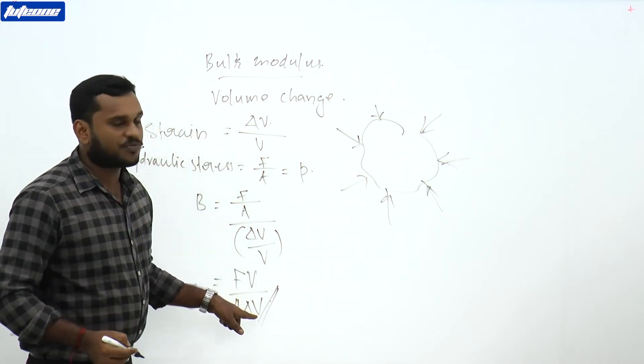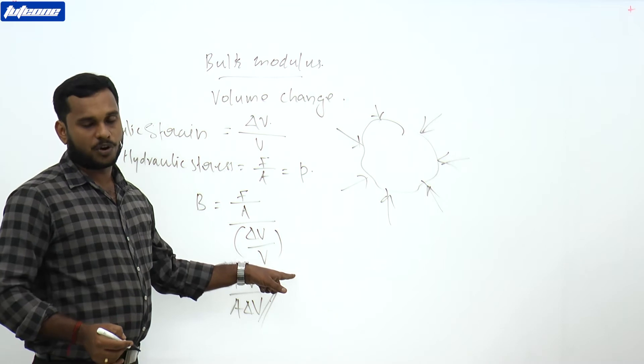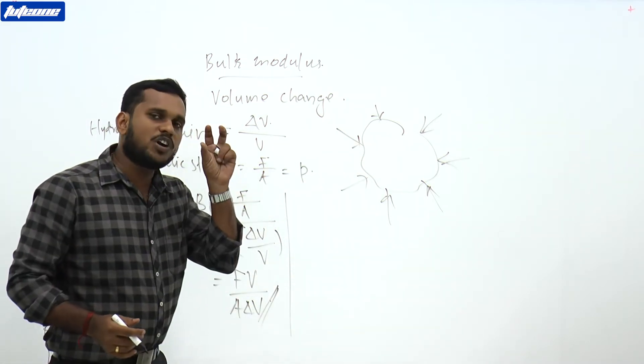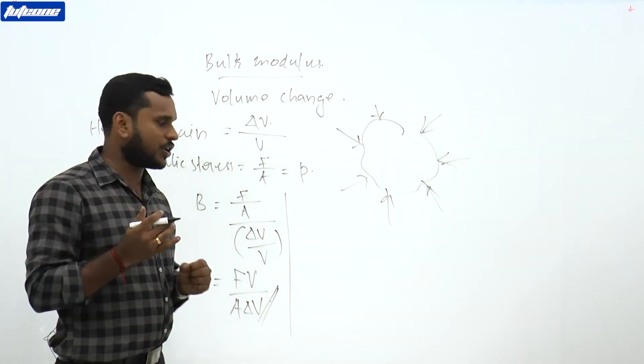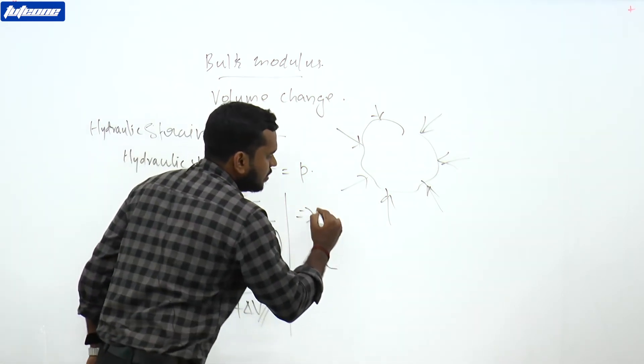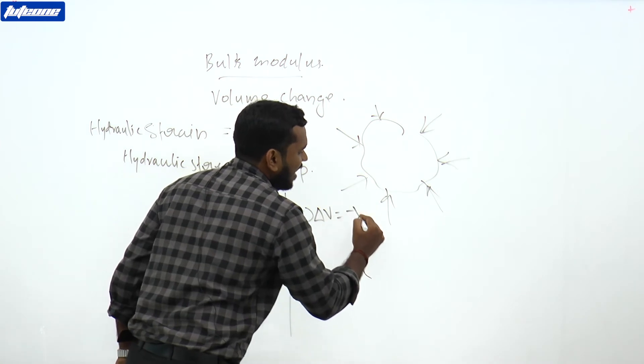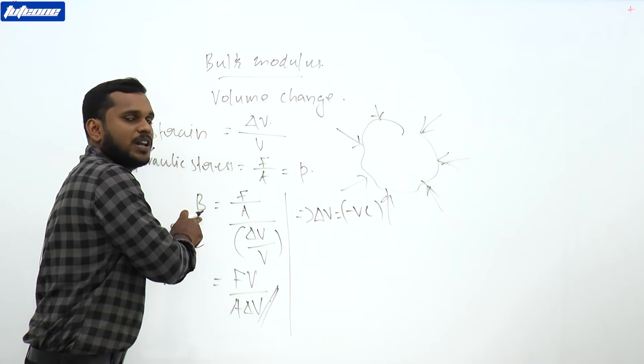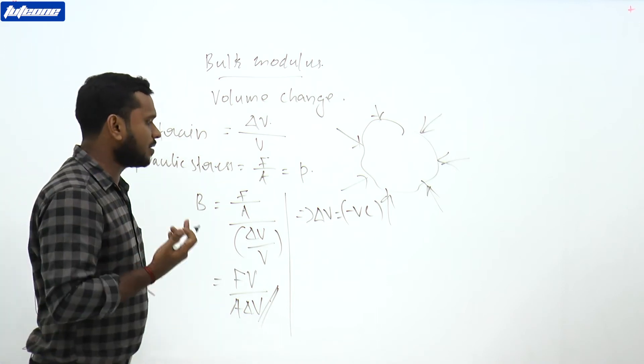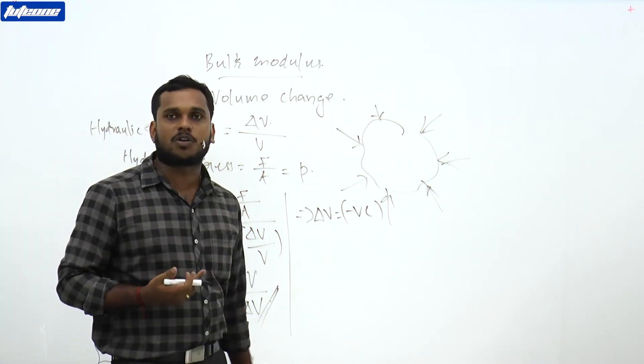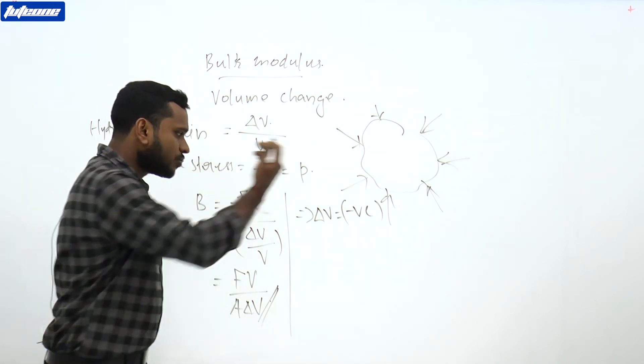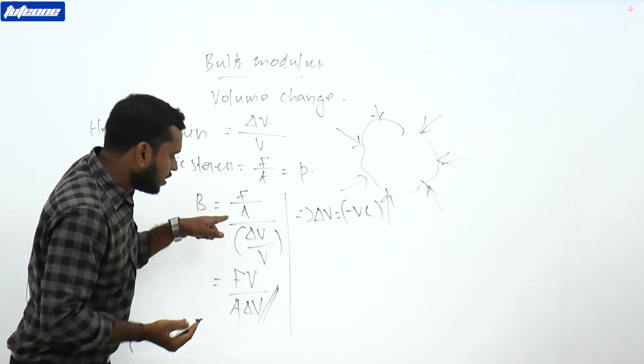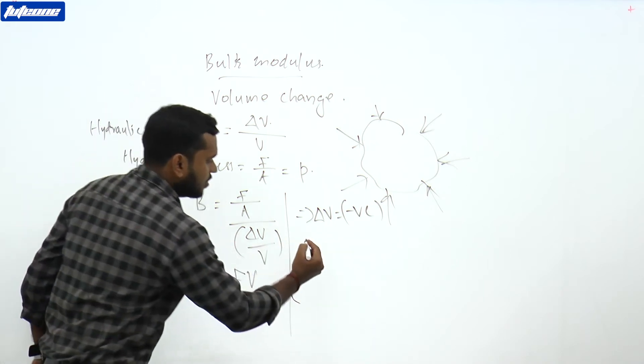Here delta V is the final volume minus initial volume. Due to the pressure, the volume is actually decreasing, so the final value is less than the initial value. This implies delta V is a negative quantity, so the bulk modulus would become negative, which is not possible since modulus of elasticity is always a positive quantity.